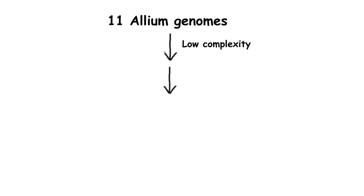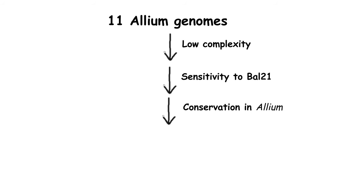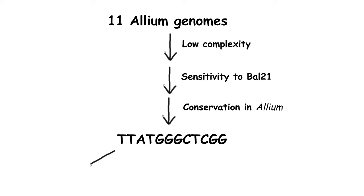Filtering of genomic data from 11 Allium species resulted in one candidate sequence with all features typical for telomeres. This candidate sequence could be used for the production of telomeric fragments with extracts from garden onion, strongly suggesting that it constitutes the telomeric sequence.